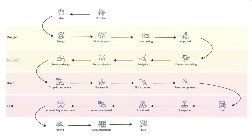Here's a workflow diagram. Hopefully in your case it starts with a problem — something that actually needs solving. The next step is going with the design team and working out how to solve that problem. There's the design itself in Figma, then it goes to a working group to determine the best design. The design then goes through user testing, gets refined and updated, and then finally goes to approval. That's six steps already and we haven't actually got to building it yet.